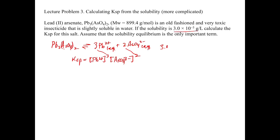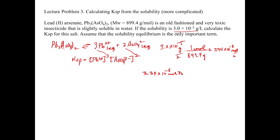The solubility is 3.0 times 10 to the minus 5 grams per liter, so we convert to molar by dividing by the molecular weight of 899.4 grams per mole. This gives a concentration of 3.34 times 10 to the minus 8 moles per liter. We have to be careful — this is moles of Pb₃(AsO₄)₂ per liter, so we still need to apply stoichiometry to get the individual ion concentrations.